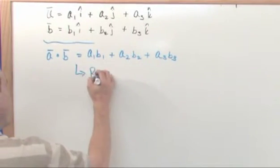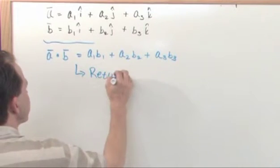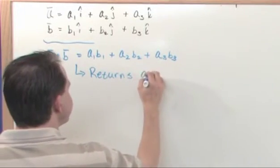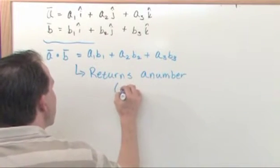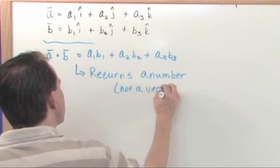So the dot product always returns a number, not a vector.